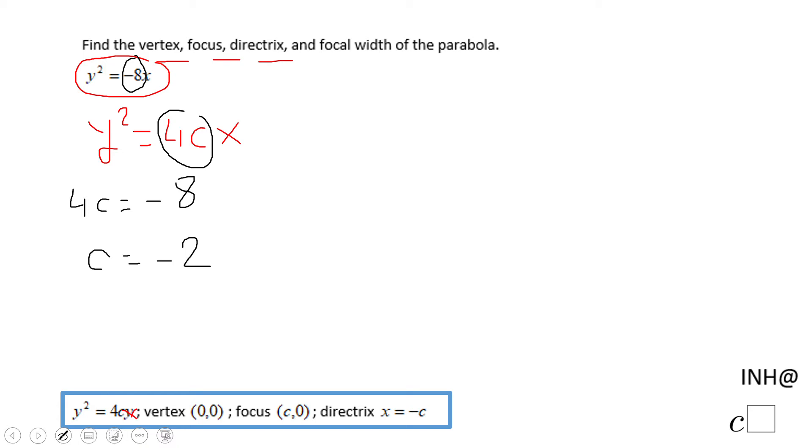Now you may want to use all these things that we have here, but usually what I do is use a graphical approach. I see this one has a y squared, so this means it's either opening like this to the left or to the right. Since this is negative, it's going to be this one.